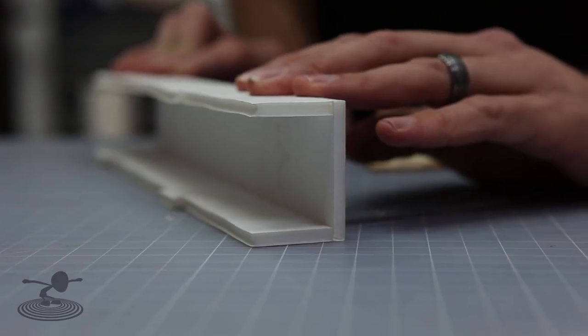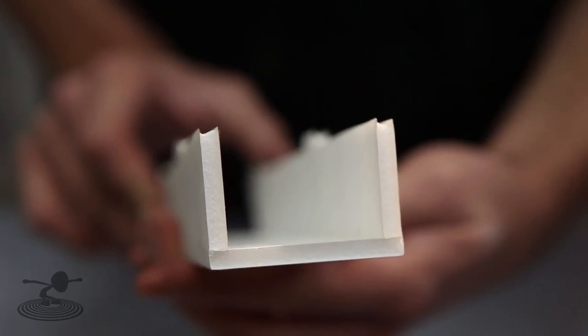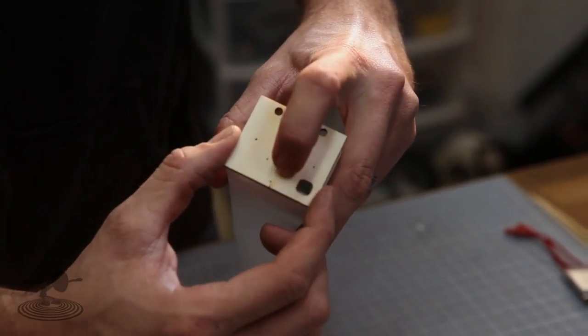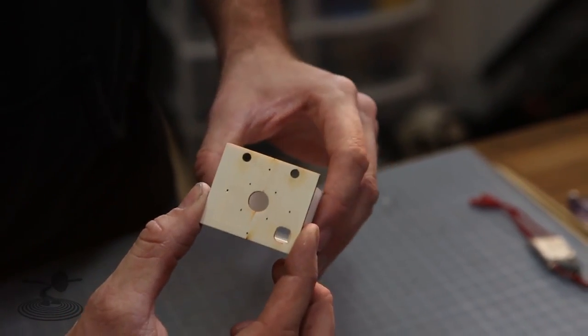Once that side's done, we'll repeat the process for the next side. Now that we're happy with that, check and make sure everything is nice and square. Our next step is to install the firewall onto our power pod itself. Check the fit, making sure that the bottom of the firewall is nice and flush with the bottom plates and the side is flush with the side plates.